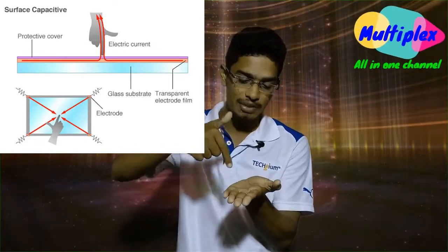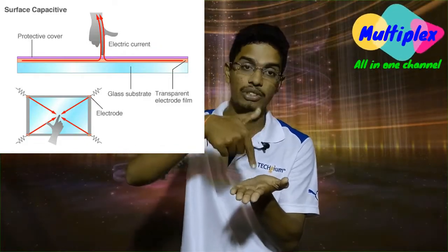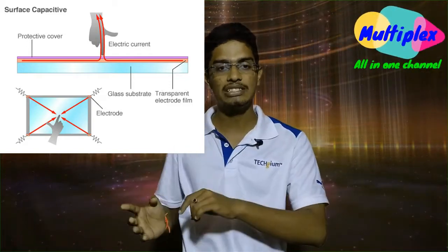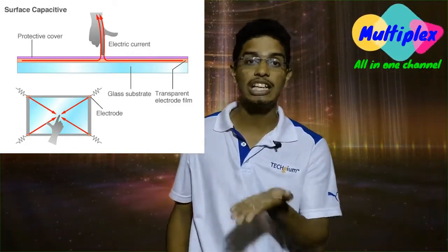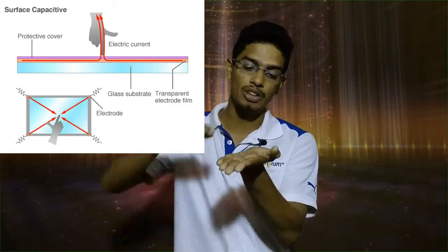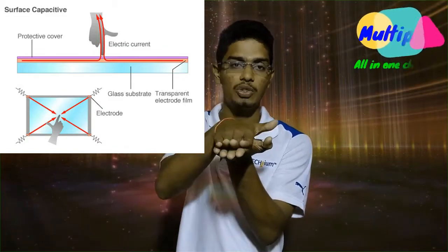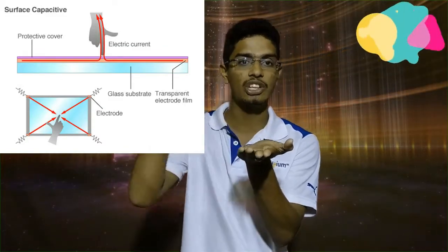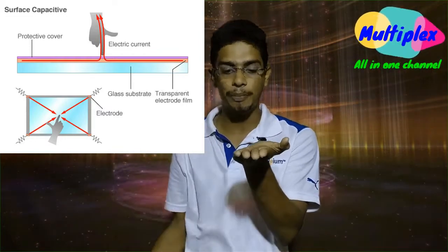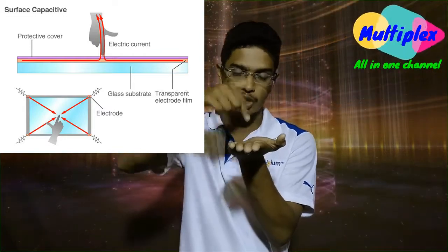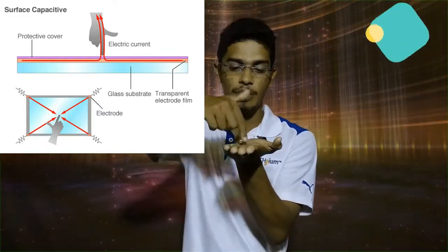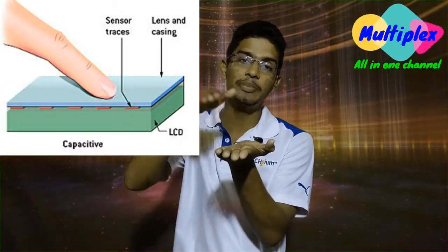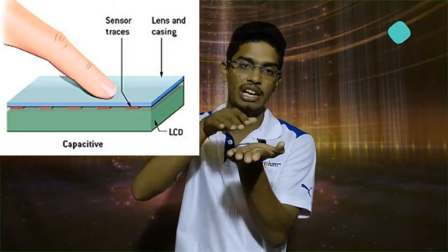We have a conductor. When we touch the capacitive touch screen, we have a glass layer coated with indium tin oxide — that is a transparent conductor. When we touch our body to the screen, the current flows. With the embedded sensors, we can recognize how and where we touch it.